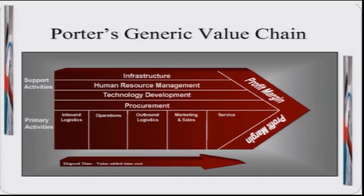Each support activity can contribute to increasing the efficiency of each of the five primary activities. For example, technology development can help reduce cost in inbound logistics, improve operations to produce better quality products, enable better delivery to consumers, improve marketing and sales effectiveness, and make the organization more responsive to customer needs in service.